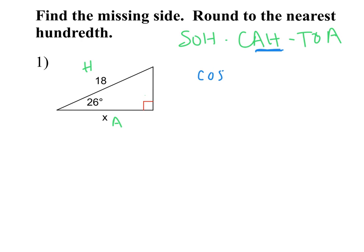Now I'm writing an equation. We practiced writing ratios yesterday; the only difference today is that instead of a letter for the angle, we put in the actual angle measure. Cosine of 26 degrees is equal to adjacent over hypotenuse — but I'm going to write the actual numbers: adjacent is x and hypotenuse is 18. So the equation is: cos(26°) = x/18.